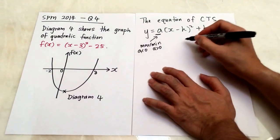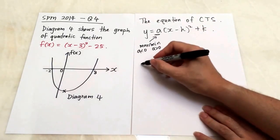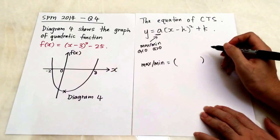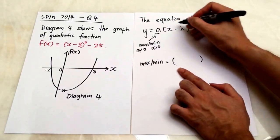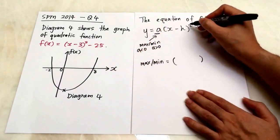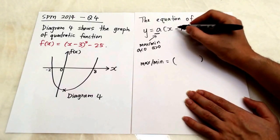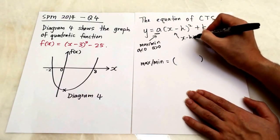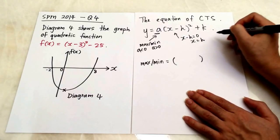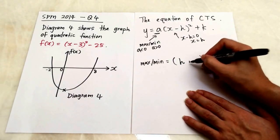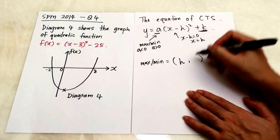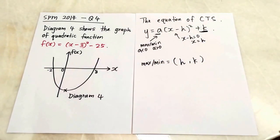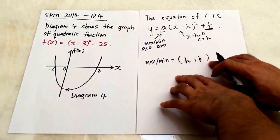No matter whether it's maximum or minimum, the way you take out the coordinate is always the same. The x-coordinate comes from inside the bracket — if you see x minus h, imagine x minus h equals 0, so x equals h. The y-coordinate you simply take from the last constant value, which is k.